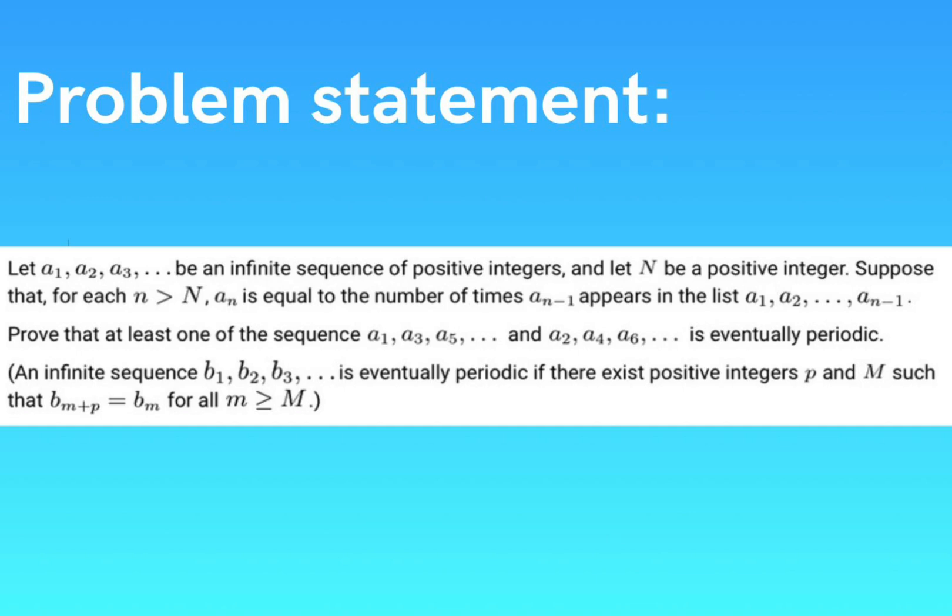Basically, this holds for all sufficiently large k. And we are asked to prove that at least one of the sequences A1, A3, A5 and so on, or A2, A4, A6 and so on, is eventually periodic.